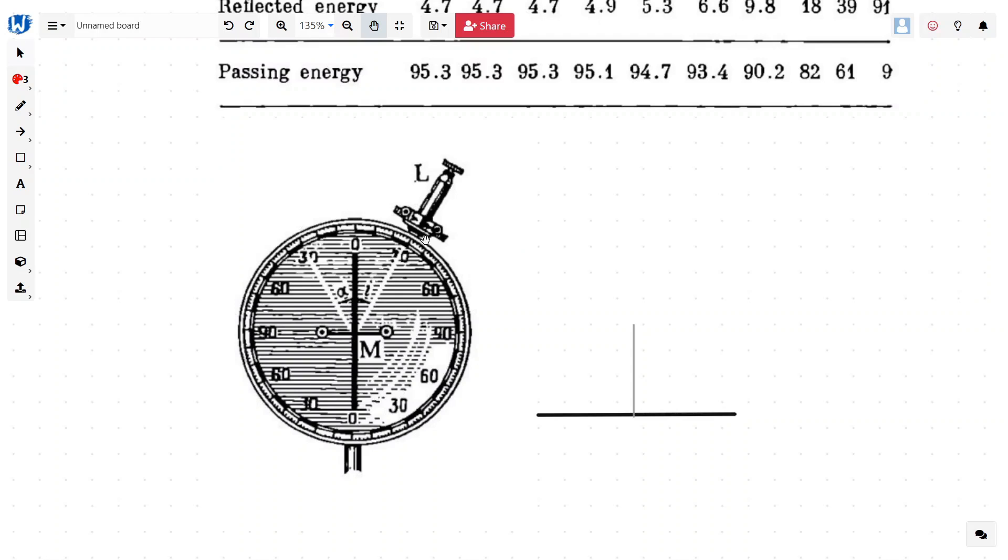So, here is an experimental setup consists of optical disc which has an angle mark from 0 to 90 from this side and 0 to 90 from this side, as well as a light source from where we can get a ray of light on a mirror m.